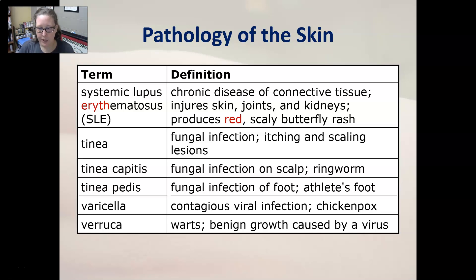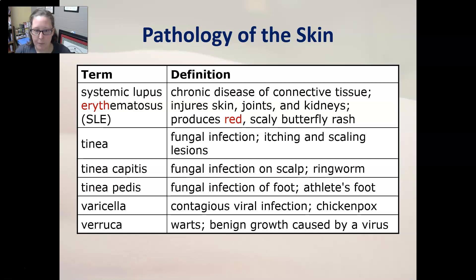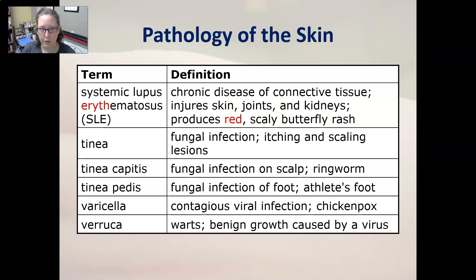Tinea is a fungal infection with itching and scaling lesions. Tinea capitis is a fungal infection on the scalp commonly referred to as ringworm; you can also get it on the skin and it is still called ringworm. There is no worm involved—it looks like there might be one because the lesion is raised and round. Tinea of the foot is also known as athlete's foot. Varicella is a contagious viral infection also known as chickenpox. Verruca is a wart, a benign growth caused by a virus—specifically, human papillomavirus (HPV) causes most warts.